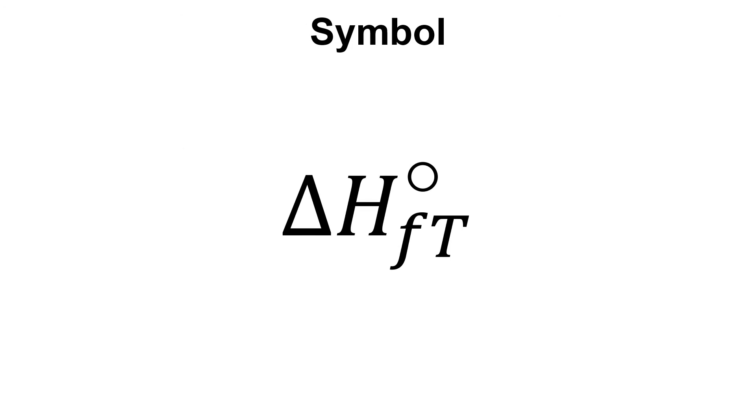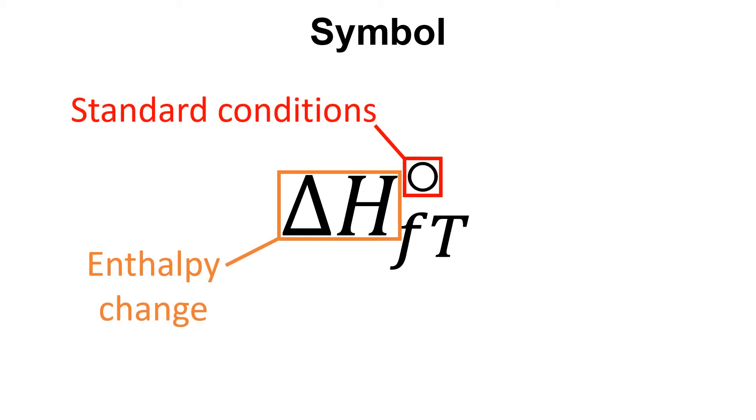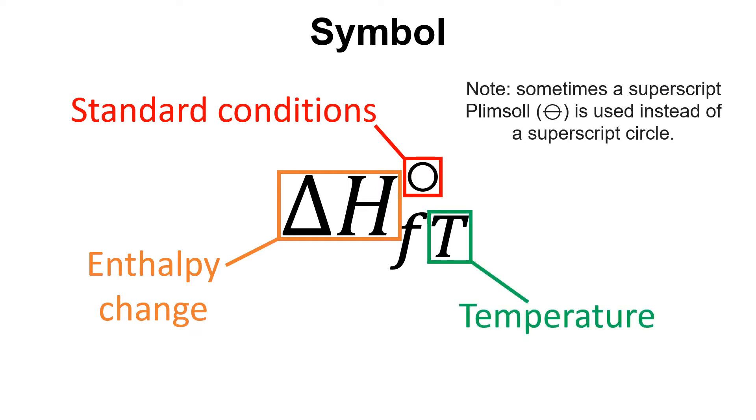Here's the symbol for the enthalpy change of formation. The delta H is representing enthalpy change. The superscript circle is representing standard conditions. Now sometimes this is actually replaced with a superscript plimsoll instead of the superscript circle. T is for temperature at which this value is applicable, and the subscript f is to note that this is for formation.